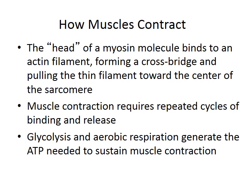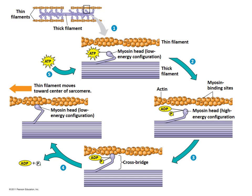The head of a myosin molecule — the thick fiber — binds to an actin filament, which is the thin fiber, forming a cross bridge and pulling the thin filament toward the center of the sarcomere. Muscle contraction requires repeated cycles of binding and release. Every cycle of binding and release uses one ATP. Glycolysis and aerobic respiration generate the ATP needed to sustain muscle contraction.